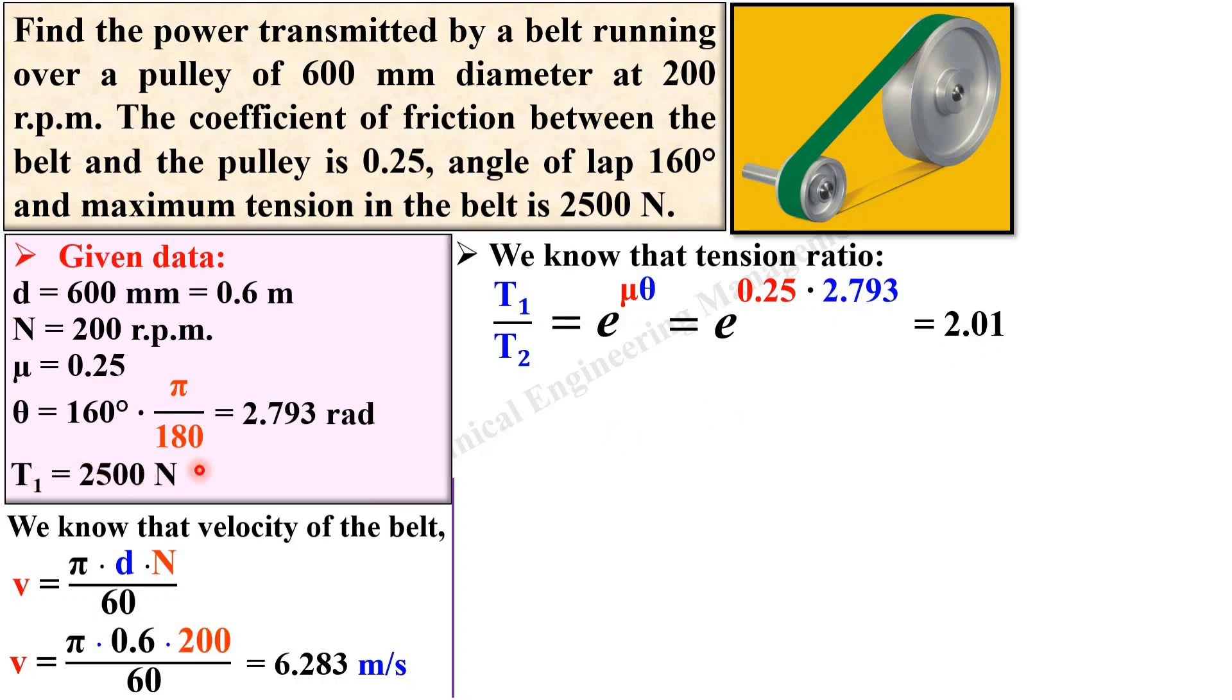Now again you have the T1, so put it over here. T1 is equal to 2500, T2 as it is is equal to 2.01. Now from this equation you can find T2, which gives 2.01·T2 equals 2500, so T2 equals 1244 N. Again T2 is the slack side tension, that is why it is in Newton.